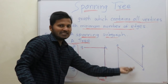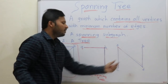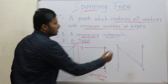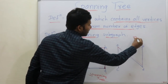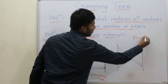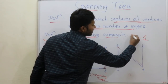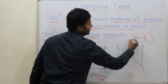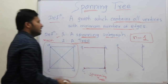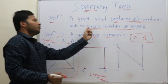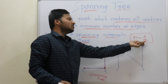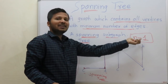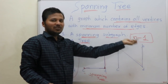...it should always stay connected. Then the number of edges are always n minus 1. So what is the meaning of minimum number of edges? The edges should be n minus 1.